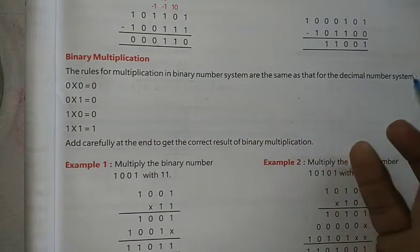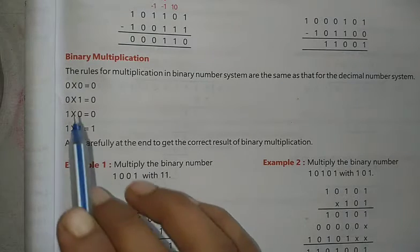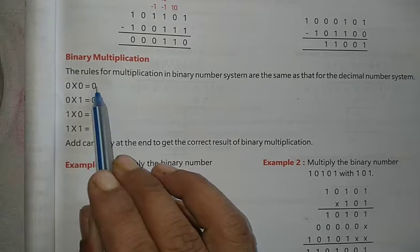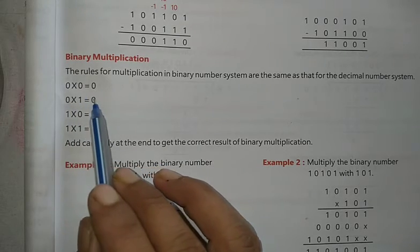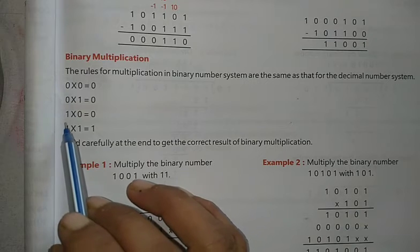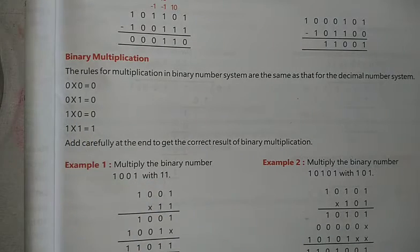The rules for multiplication in binary number system are the same as for the decimal number system. What are the rules? If you multiply 0×0 you get 0. If you multiply 0×1 you get 0. If you multiply 1×0 you get 0. If you multiply 1×1 you get 1.